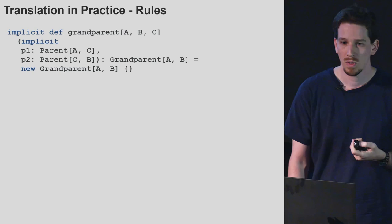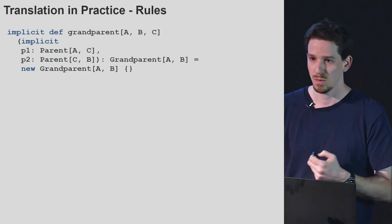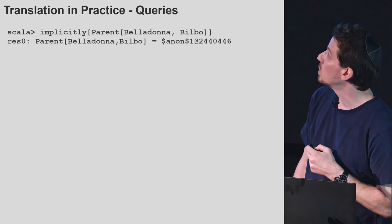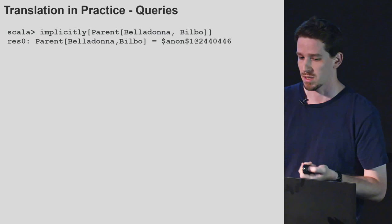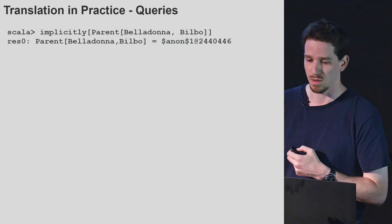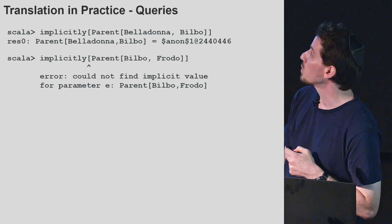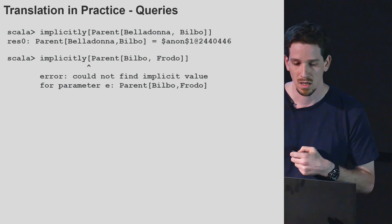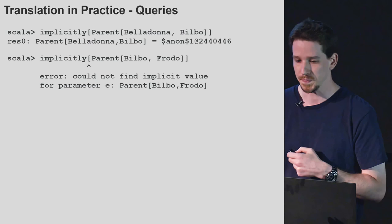Now we can query our knowledge base. Just as in Prolog we query the REPL, now we'll query the compiler. We're asking the compiler: is it true that Belladonna is the parent of Bilbo? The compiler found the value of the right type for us — this is equivalent to Prolog saying yes. We can also make a failing query — asking whether Bilbo is a parent of Frodo — and it fails to compile, meaning there isn't an implicit value that makes this definition hold. A compilation error is equivalent to Prolog's no.